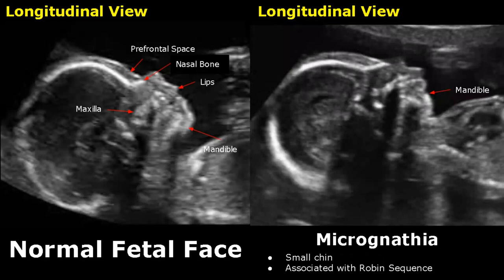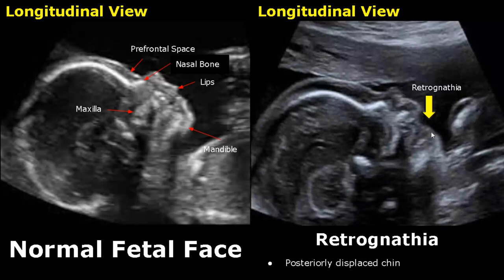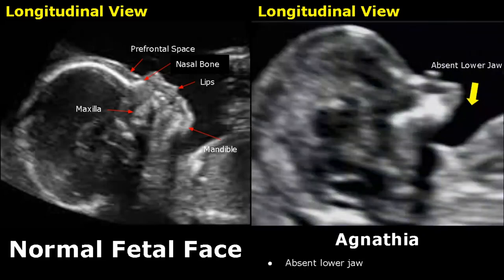Micrognathia refers to a small chin — it can be difficult to diagnose because it can be subtle. Here we can see a small chin that is not leveling with the upper jaw. In retrognathia, the chin is displaced posteriorly, and it is difficult to diagnose on ultrasound. In agnathia, the lower jaw is absent — in this image, the lower jaw is not seen; it is missing.